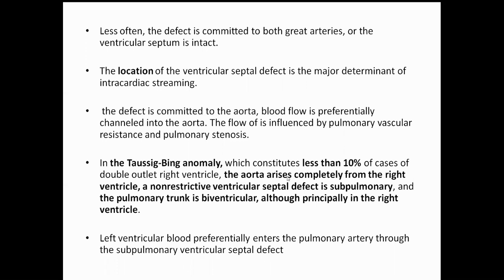In the Taussig-Bing anomaly, which constitutes around 10% of cases of DORV, the aorta completely arises from the right ventricle, there is a non-restrictive VSD with a subpulmonary component, and the pulmonary trunk is biventricular but principally in the right ventricle. The left ventricular blood preferentially enters the pulmonary artery through the subpulmonary ventricular septal defect.